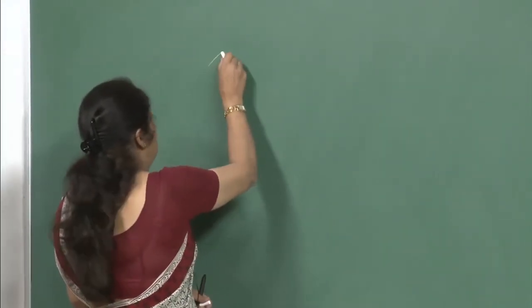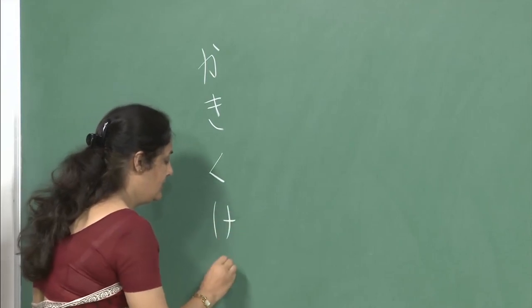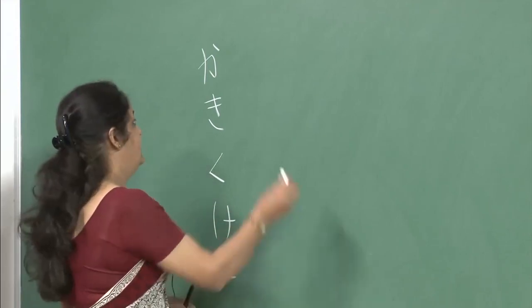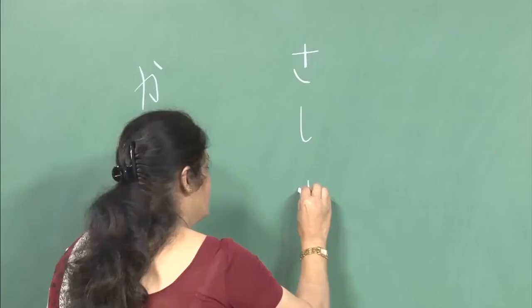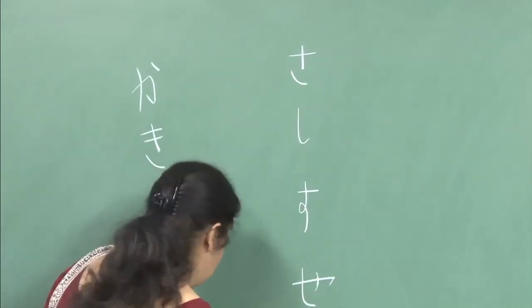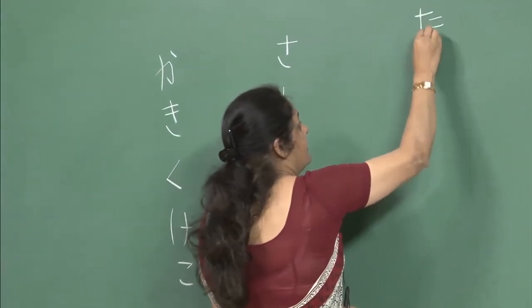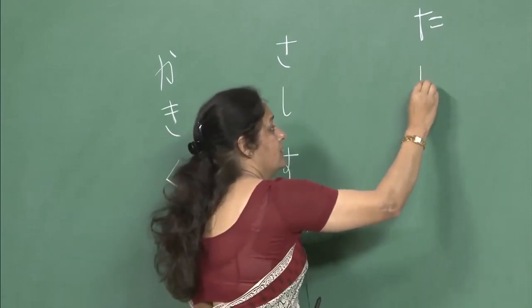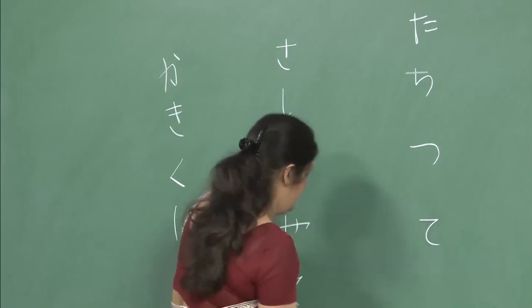I will write it down for you. You remember doing the k sound: ka, ki, ku, ke and ko. Then we did sa, shi, su, se and so. Then the third set we did was ta, chi, tsu, te and to.